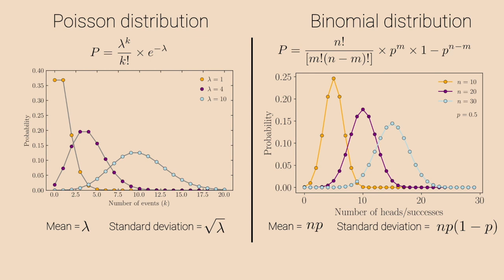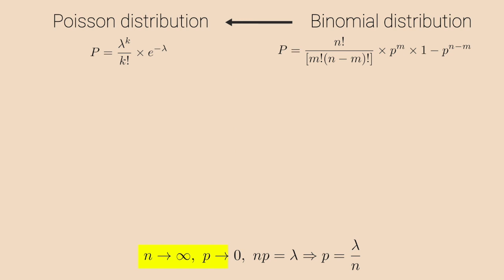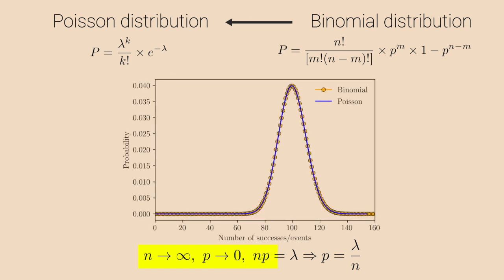We talked about two distributions and they might seem completely different to each other. But it turns out that one can recover the Poisson distribution when the number of trials are large, i.e. n tends to infinity, but the probability of an event is rare, i.e. p tends to 0. For example, the events like shark attacks which have extremely rare probability. As well as the product np is constant. In that case, one can approximate binomial distribution as Poisson distribution.